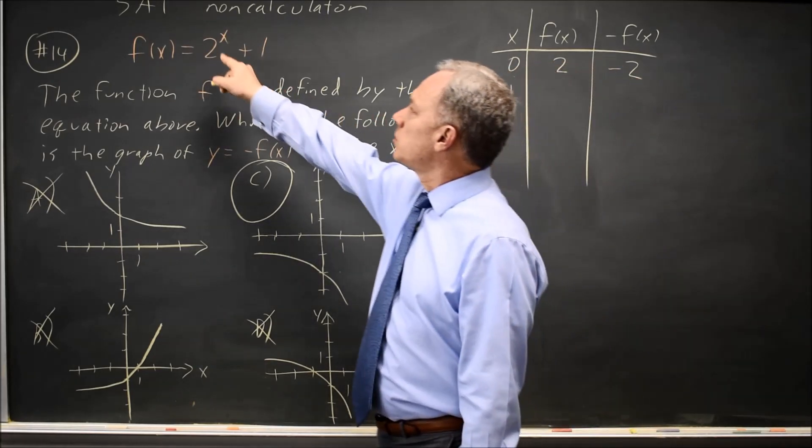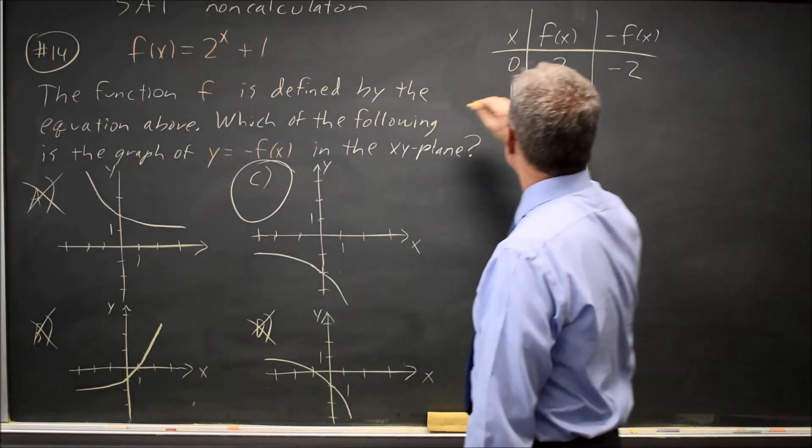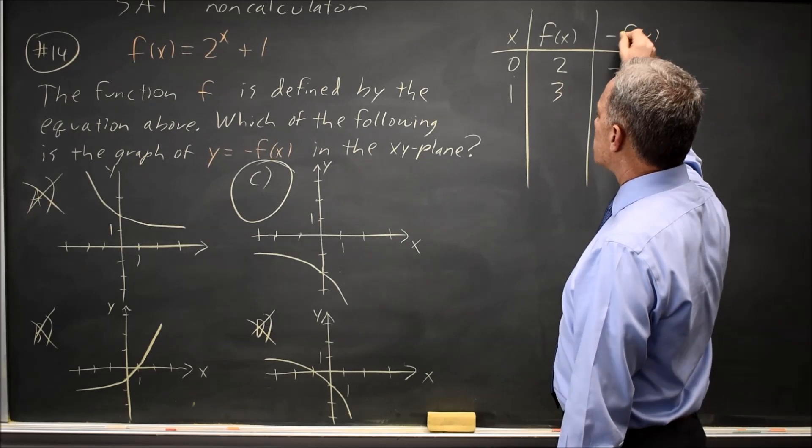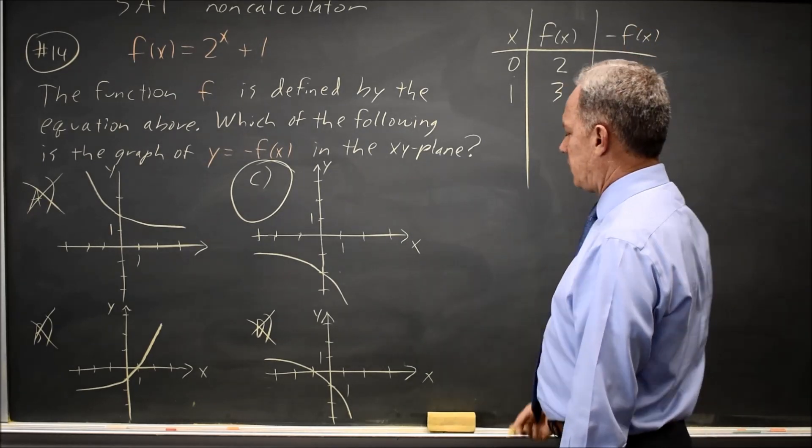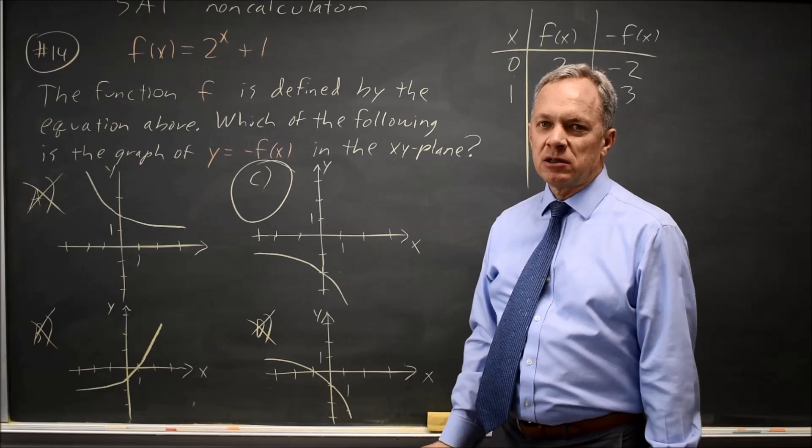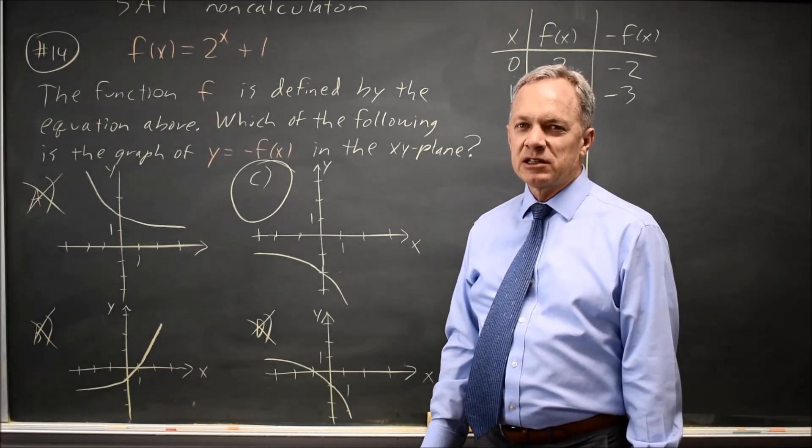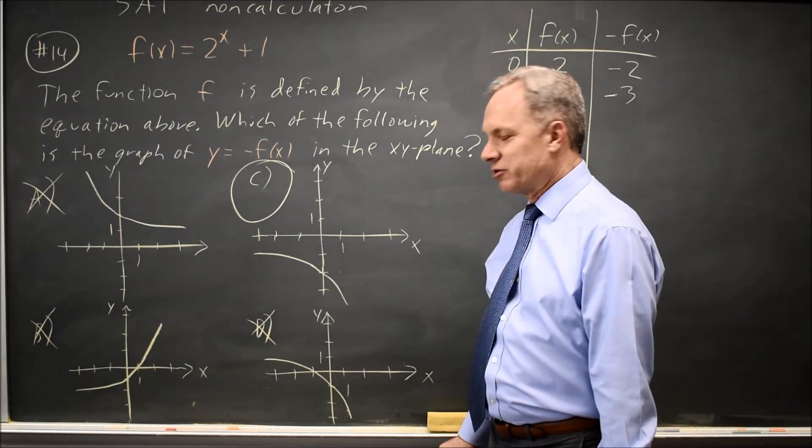I could put in x equals 1. 2 to the 1 is 2 plus 1 is 3, and then the negative of 3 would be negative 3, and that looks about where we went here within the artistic capabilities of the person who drew it, which would be me.